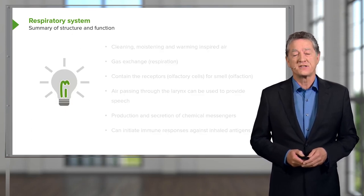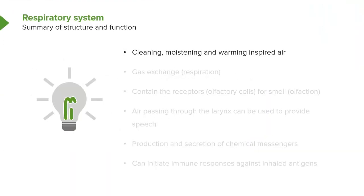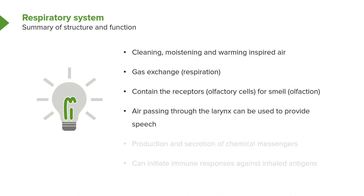The lung has a number of different structures that perform very important functions. It's important to clean, warm and moisten the air before it passes down into our lungs, and it's important to understand gas exchange interfaces. We're also going to appreciate that there are a number of different cells in the respiratory system that are receptors — for instance those that help us to smell. We'll also briefly account for how we can speak by looking at structures in the lung, and it's important that you understand how we can produce speech.